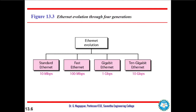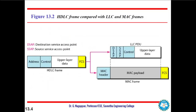Referring back to the HDLC (High-Level Data Link Control) frame format: the HDLC frame is formed by the upper layer data kept as the payload, the frame check sequence (FCS) added as the trailer, and the various control bits and address bits added as the header. This is the general frame format.